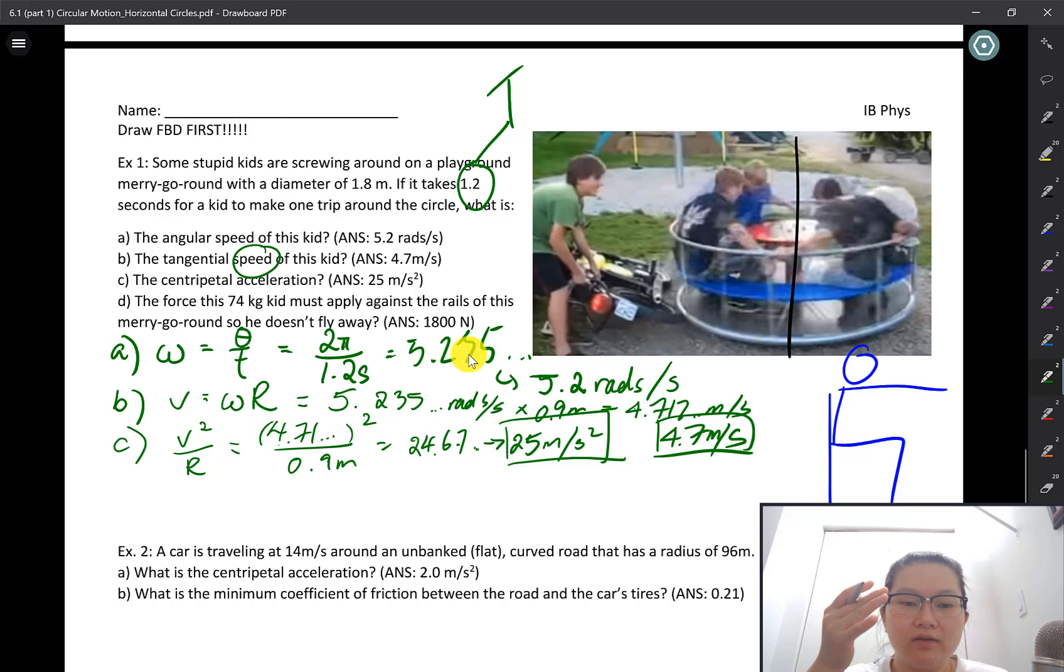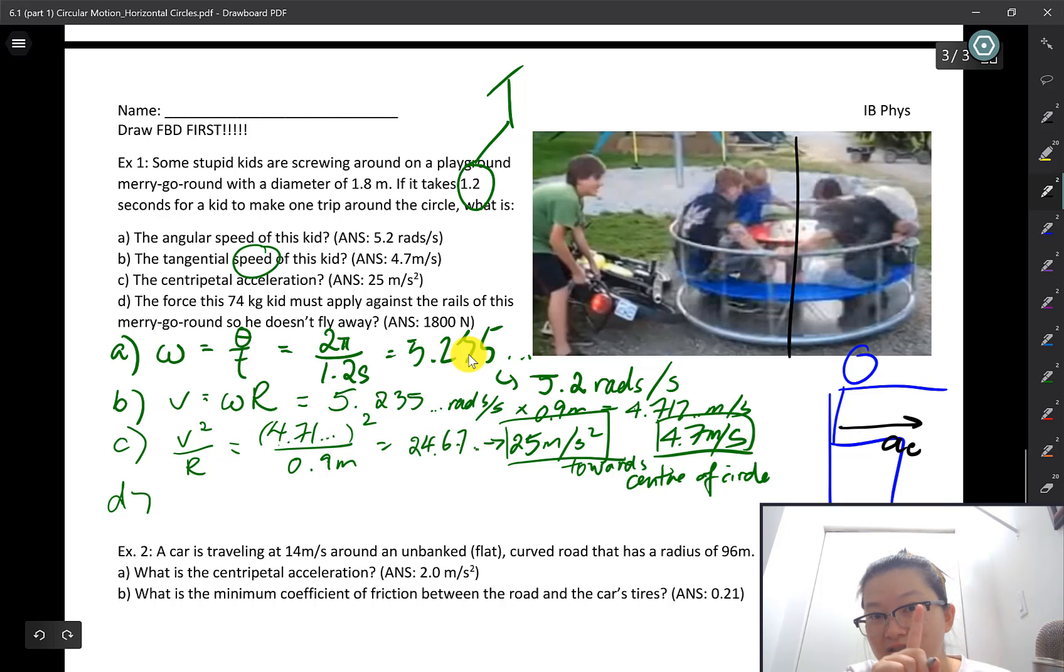The centripetal acceleration is always directed towards the center of the circle, so if it's asking for that, it's kind of assumed that the direction of the acceleration is in that direction. Last but not least, part D: the force this 74 kilogram kid must apply against the rails of this merry-go-round so he does not fly away. To answer this question, this kid is going around in a circle. If he goes around in the circle, he will have a centripetal acceleration directed towards the center of the circle as he is moving around.